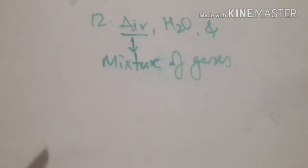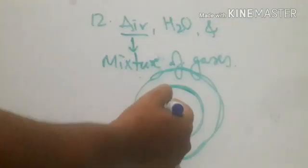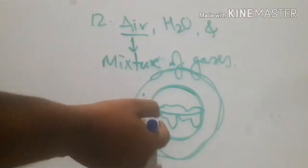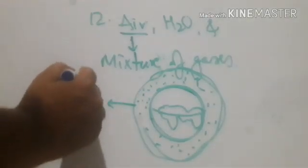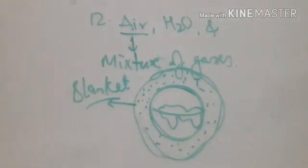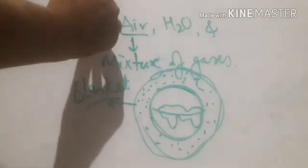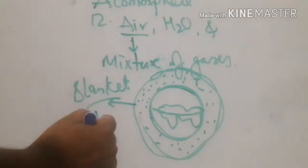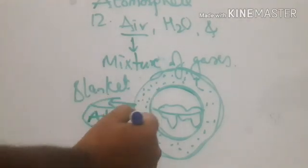Air is the mixture of gases, and this layer of air is present around the earth. Air surrounds the earth like a blanket. This blanket of air that is present around the earth is what we call the atmosphere.